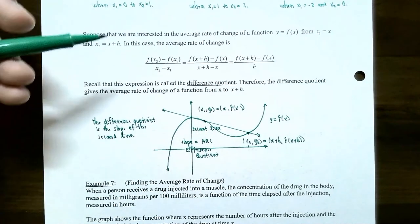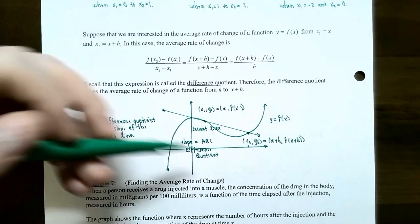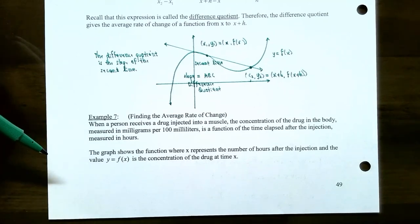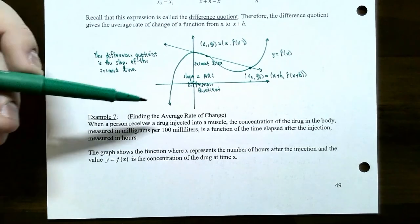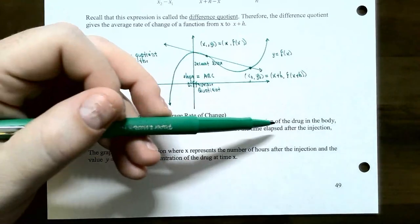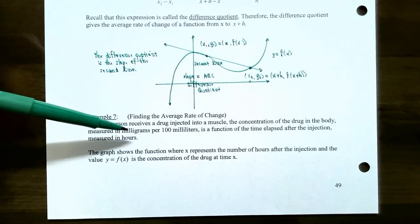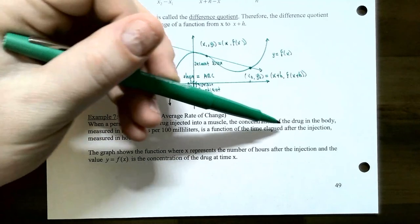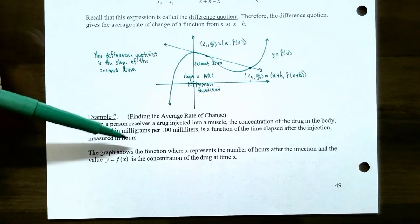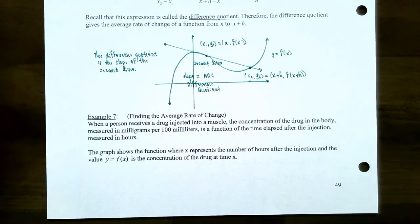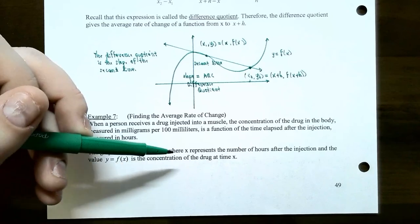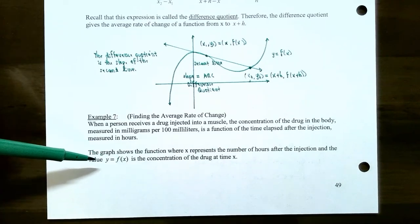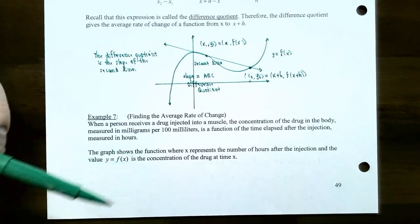If you take calculus you'll see a lot more about the difference quotient and average rate of change, but this is as much as we'll cover in college algebra. In the last example, we look at a graph and find the function's average rate of change on a closed interval. When a person receives an injection into a muscle, the concentration of the drug in the body — measured in milligrams per 100 milliliters — is a function of the time elapsed after the injection, measured in hours.